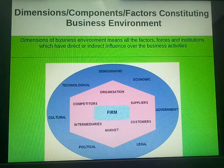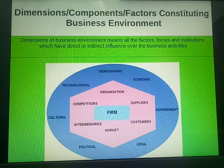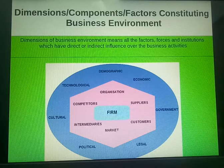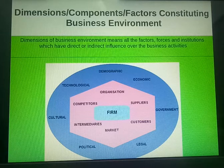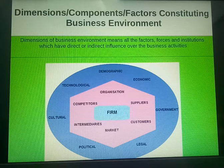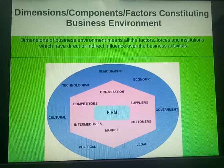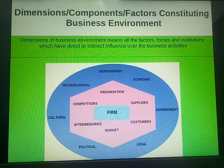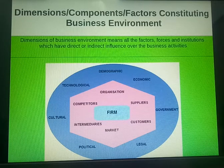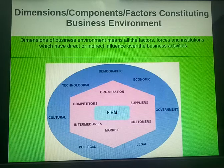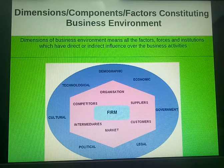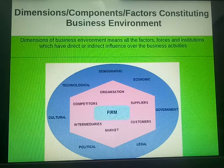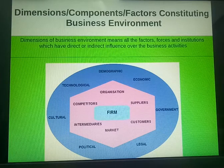In this diagram you can see that the firm is there, and in the pink box the organization, competitors, suppliers, intermediaries, customers and market are there. These all generally form the micro environment of the business. And in the blue box you can see demographic, economic, technological, cultural, government, political and legal — these terms are related with the macro environment of any business.